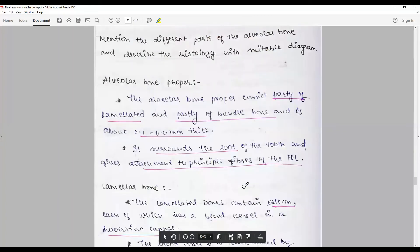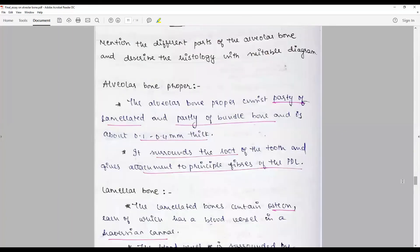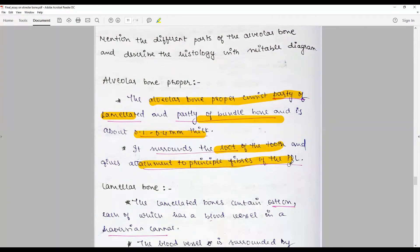Let us see how another candidate has attempted the same question from a different perspective. The alveolar bone proper consists of partly lamellated and partly bundle bone and is about 0.5 to 0.4 mm thick, surrounds the root of the tooth, and gives attachment to the principal fibers of the periodontal ligament.